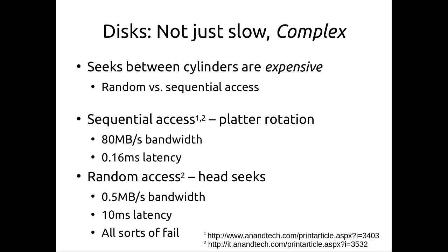We want to optimize for spatial locality because the disk itself has extreme spatial locality. If we just use rotation — accessing contiguous blocks — it's fast. If we need to seek, seek is slow. Sequential access uses platter rotation and provides decent bandwidth and latency. Random access across the disk requires lots of head seeking, giving a couple of orders of magnitude worse bandwidth and higher latency. As an OS, we want to maximize sequentiality while minimizing random accesses.